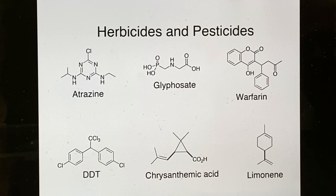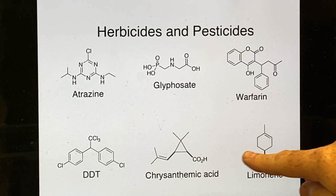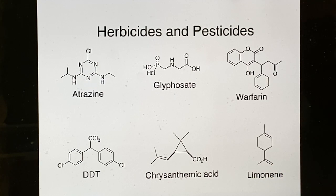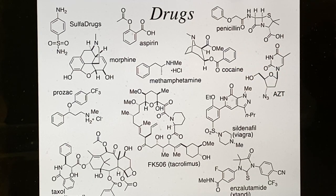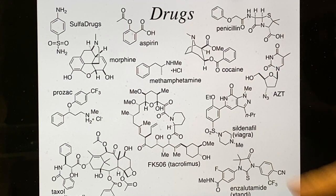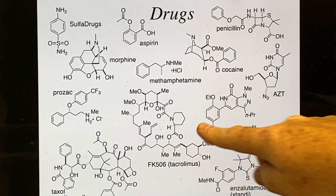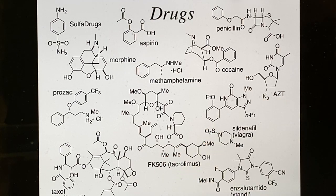Herbicides and pesticides have helped agriculture, though some have been outlawed — DDT, for example. The natural ones are more common now, like chrysanthemic acid and limonene to repel insects. As for drugs, here's a sampling of common ones: penicillin, aspirin, sulfa drugs, morphine derivatives, cocaine — and related to cocaine structurally are lidocaine and procaine, the local anesthetic agents used in the dentist's chair. There's also methamphetamine, Prozac, and anti-cancer compounds like Taxol, which has a very complicated structure with many functional groups.